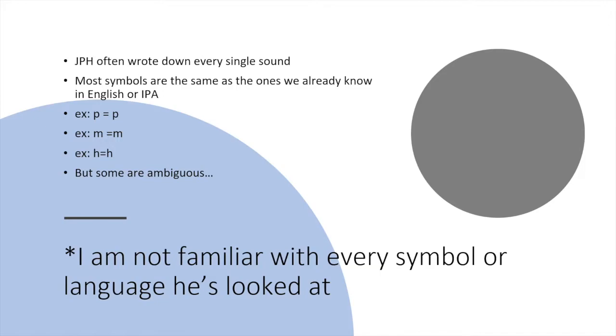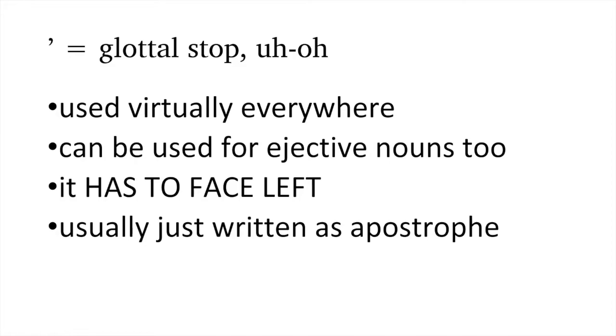John Peabody Harrington basically wrote down every single sound until he got a good idea of what the sound system of the language was, then he started leaving out some sounds, but a lot of the symbols he uses are the same ones we know in English. P is P, M is M, H is H, he wouldn't change those, but there are some symbols that are ambiguous.